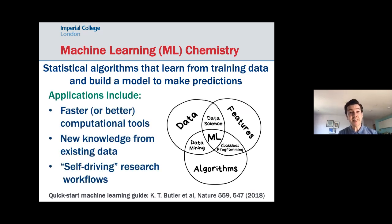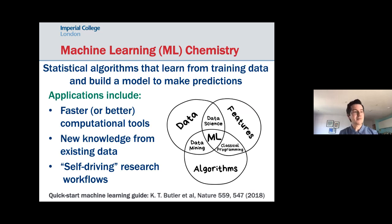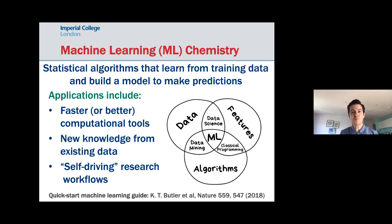My simple definition of machine learning: statistical algorithms that learn from training data and build a model to make predictions. Machine learning is most appropriate where standard methods fail — if you have so much data that you need a new tool to decipher what's going on. In my field, machine learning is being used to develop faster computational chemistry tools, to extract new knowledge from existing data using natural language processing, and for self-driving workflows where computer-controlled synthesis and characterization feed directly into optimization algorithms.